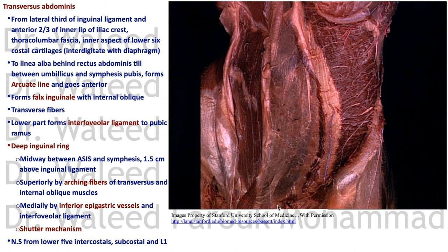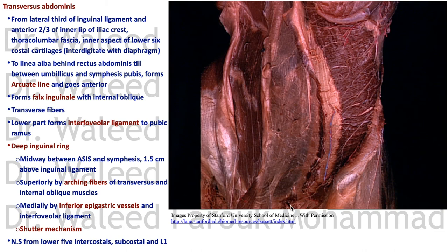The lower arching fibers take their own nerve supply from L1 via the ilioinguinal nerve — separate from the rest of the muscle which takes from the lower intercostals and subcostal. This is because of the importance of the shutter mechanism. If these fibers are paralyzed — as can happen in McBurney's incision during appendectomy if the ilioinguinal nerve is cut as it pierces the lower arching fibers — the patient may suffer from indirect inguinal hernia post-operatively.